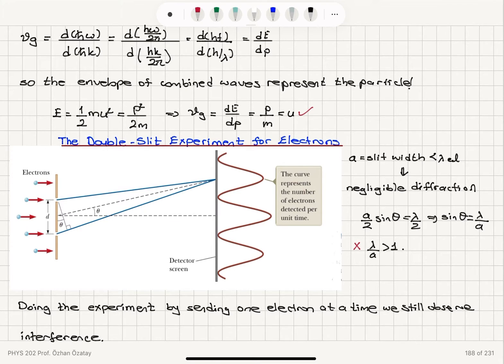The curve represents the number of electrons detected per unit time, and you can see here a wave-like character.